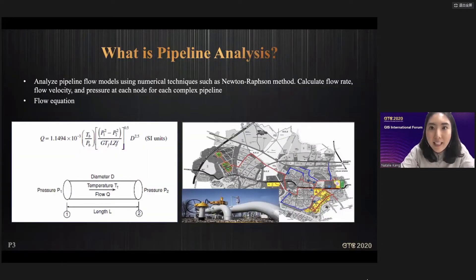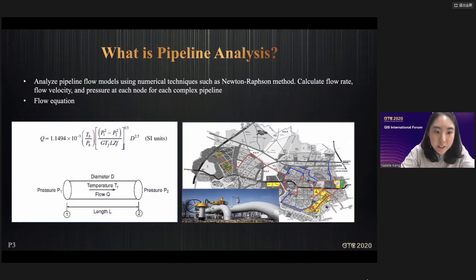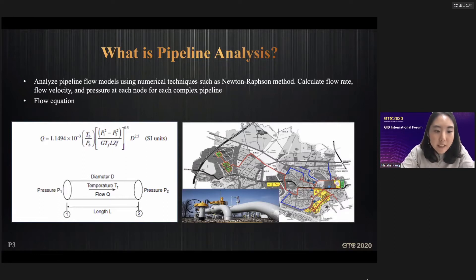What is pipeline analysis? Our pipeline analysis solution, which we named PLUS, is the introduction of numerical analysis techniques into the gas industry. The input elements used as the basis for the models are gas pipes, valves, and gas governors. The gas pipe model is represented by the flow equation Q — we can calculate the flow rate, flow velocity, and pressure in the pipeline using numerical analysis. If you apply a mathematical model like the left-side picture to the entire city, it will look like the right-side picture.